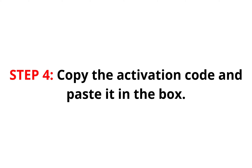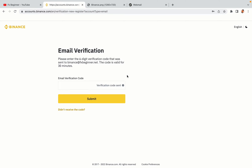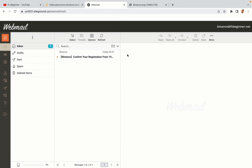Step 4: a confirmation code will be sent to your mail. Open your mail inbox, copy the code and paste it in the box to fully activate your Binance trading account.